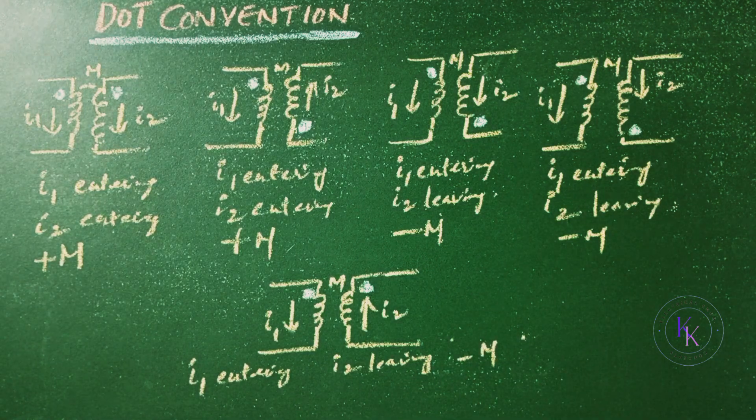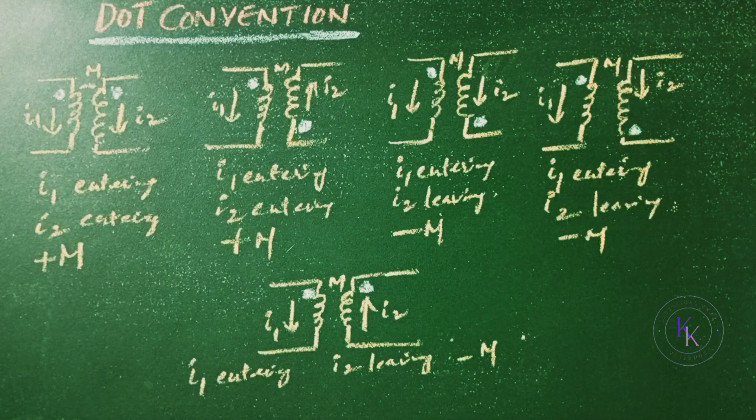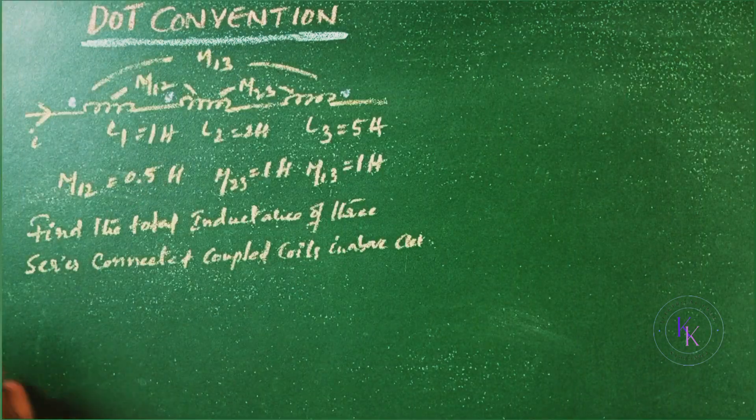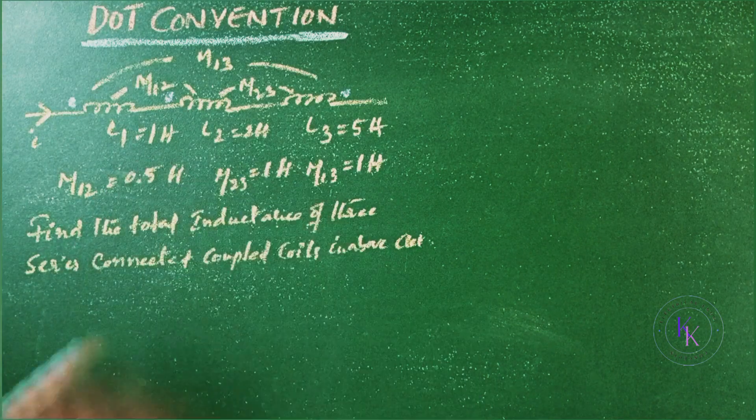This is regarding the dot convention in coupled coils. If you like this video please like, share and subscribe. Find the total inductance of the series connected coupled coil in the above circuit where the values are given.